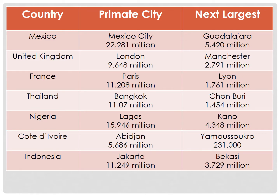Primate cities tend to be the capital city of a country, as is the case with Mexico City, London, Paris, and Bangkok, all of which are primate cities in their respective countries. But other primate cities were the capital city often during their colonial period. Lagos in Nigeria, Abidjan in Cote d'Ivoire, and Jakarta in Indonesia were all colonial capitals and remain primate cities, despite decisions to move the capital city to another location.